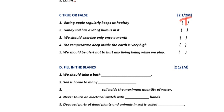Second question: sandy soil has a lot of humus in it. Humus means the dead plants and animals in the soil. Sandy soil cannot hold much water, so it will not have a lot of humus. The answer is false — F. Third question: we should exercise only once a month? No — we need to exercise daily. So this answer is false — F.